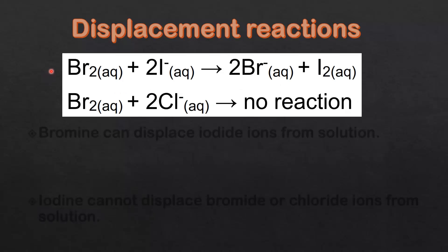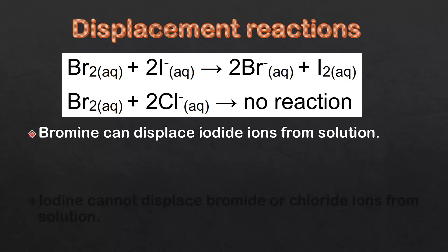Next we'll have a look at the reactivity of bromine. Bromine is able to displace the iodide ions from solution because bromine is more reactive than iodine. In the second example, bromine is unable to displace the chloride ions from solution because chlorine is more reactive than bromine, so therefore we have no reaction. Bromine can displace the iodide ions from solution but not chloride ions.